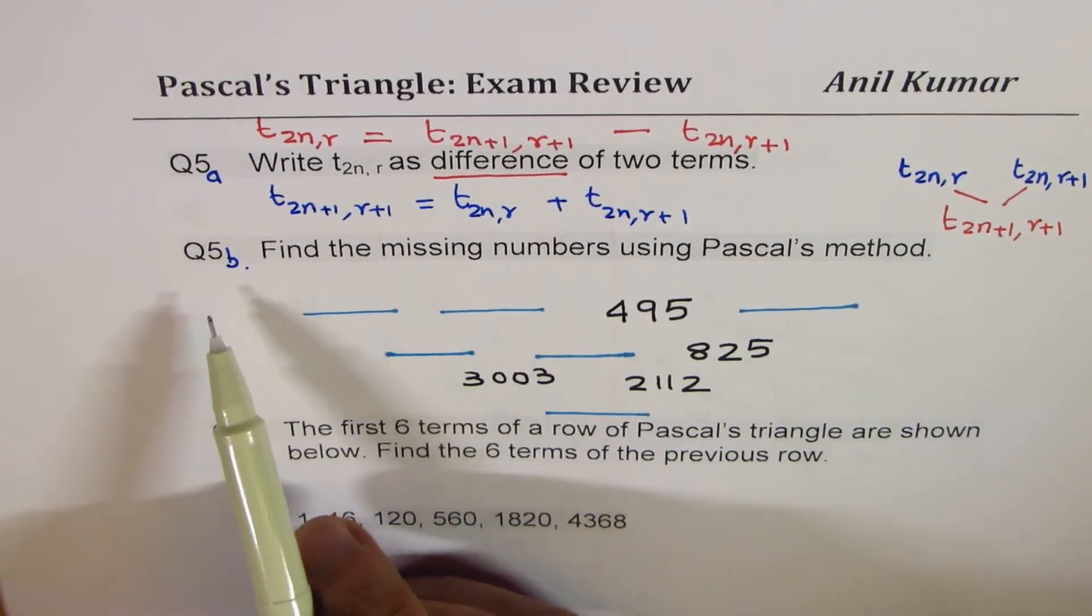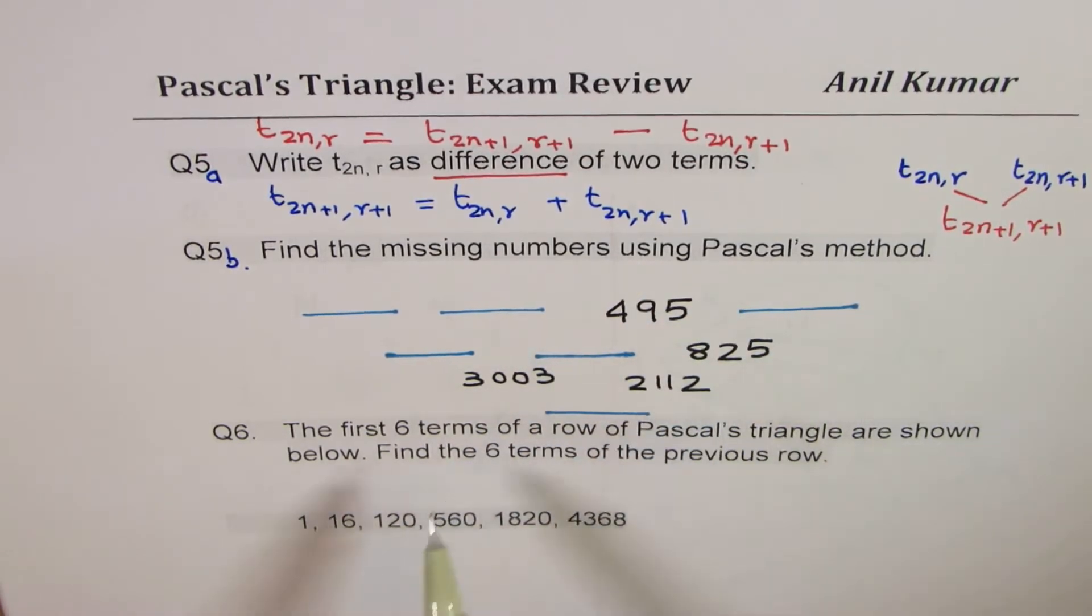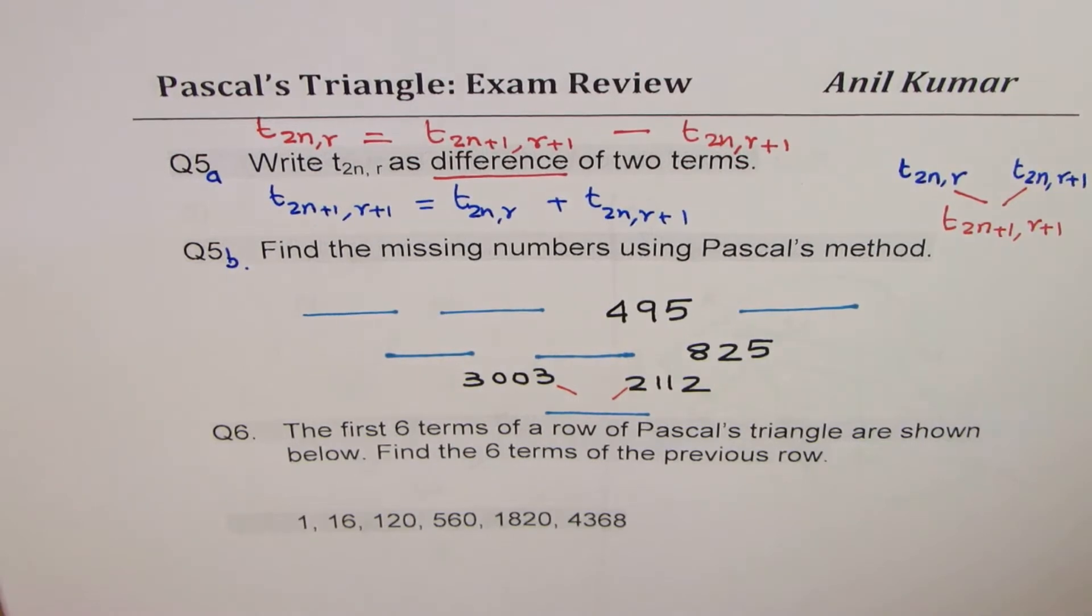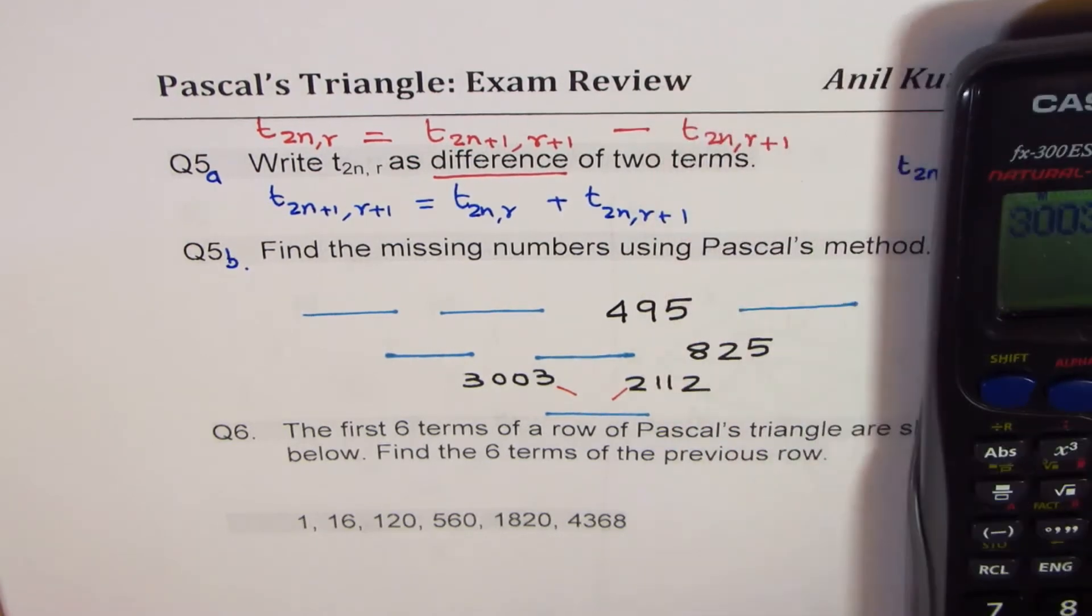Question number 5b is to use this property. Find the missing numbers using Pascal's method. So we are given four numbers here, and these are the places which we have to fill in. Now, how to do it? Let's start from here. So this number is addition of the previous two. Let's add them.